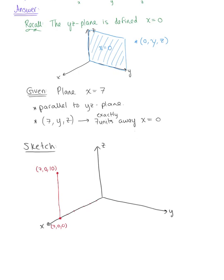And then again, starting from the original ordered triplet (7, 0, 0), we want to move 10 units to the right. So we can label this ordered triplet as (7, 10, 0).